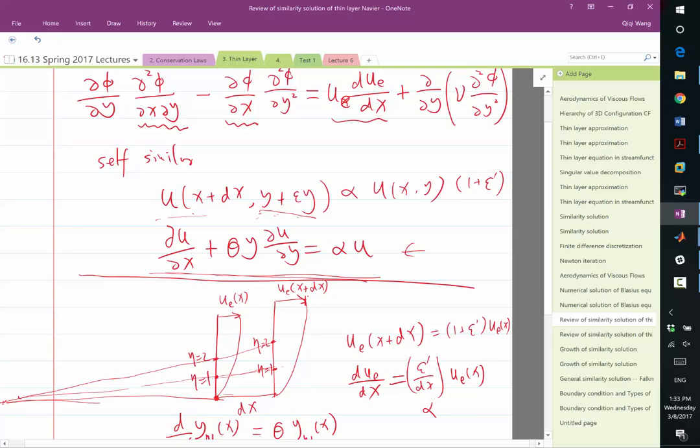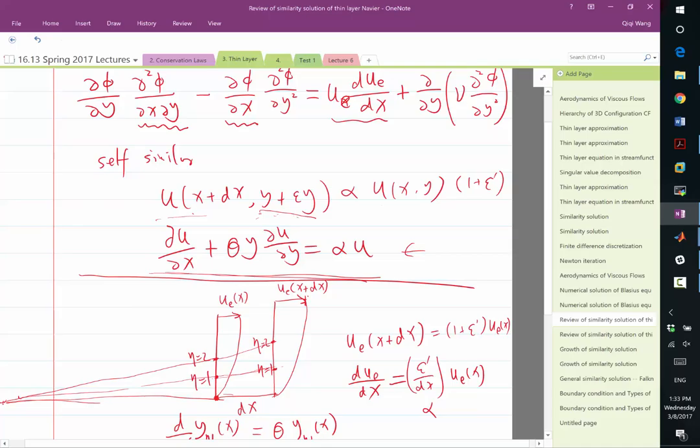So once we do that, and we can also use the same relationship here to replace this with alpha times ue squared. So now every variable that depends on x is going to be gone. And we ended up with a differential equation that only depends on y.